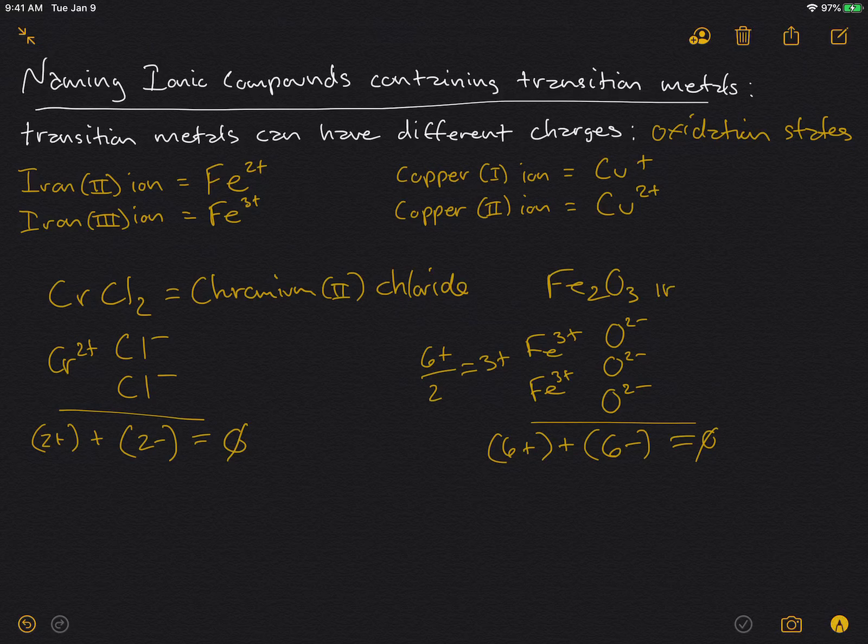So we need to indicate with the Roman numeral that we have the iron(III) ion. So this compound would be called iron(III) oxide.